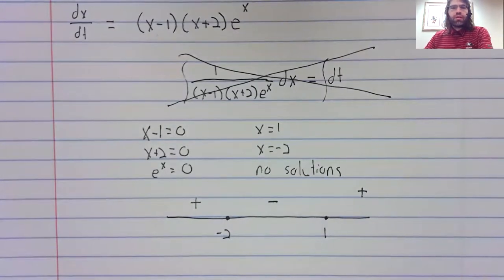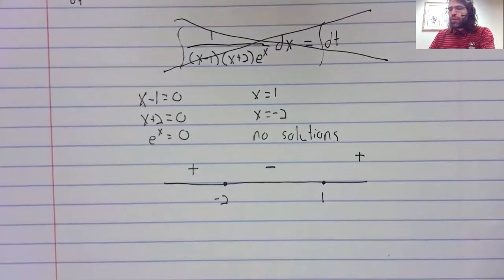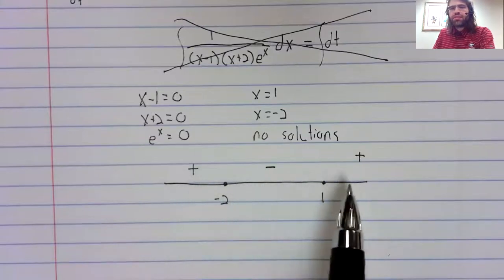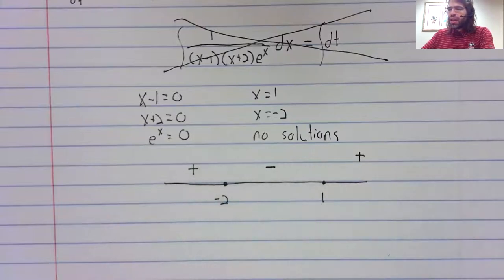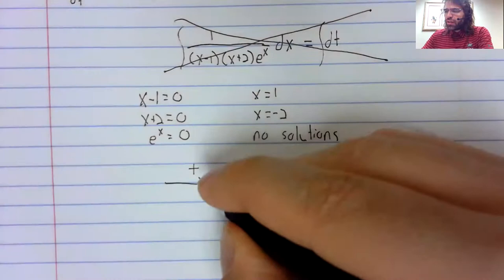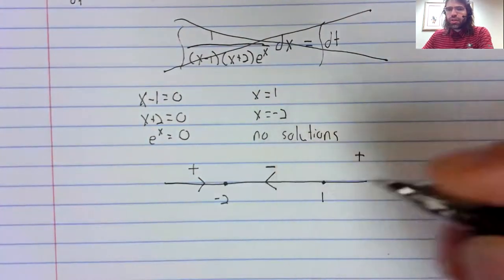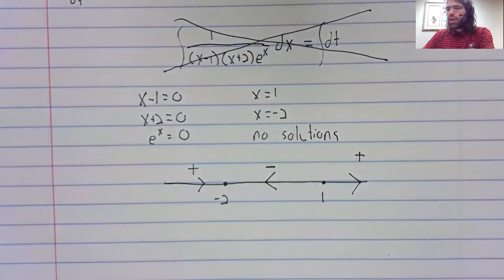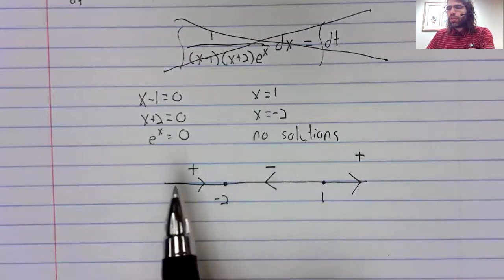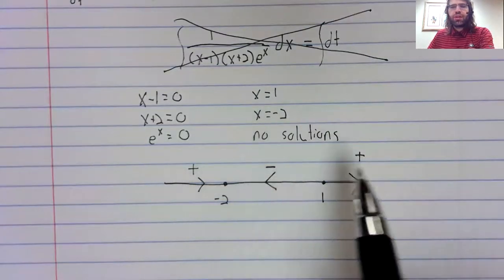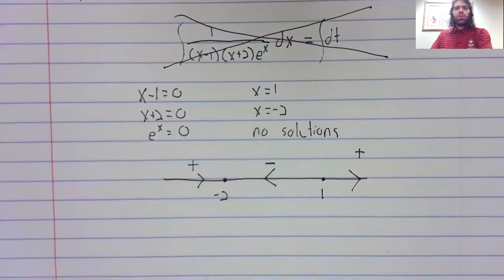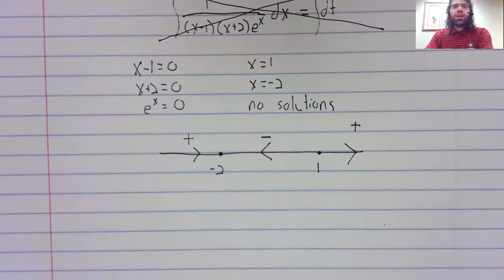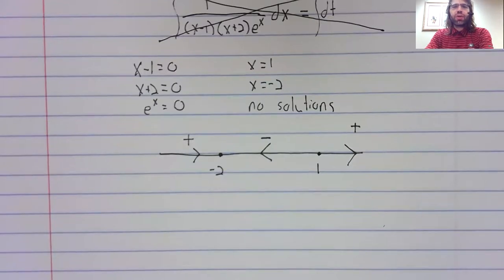So what information is this giving us? Well, remember, we're thinking of x as moving up and down this line as time passes. And the sign of the derivative tells us which direction we're going in. Positive derivatives, we're going right. Negative derivatives, we're going left. So qualitatively, we now completely understand this differential equation.